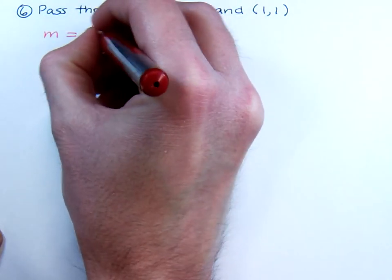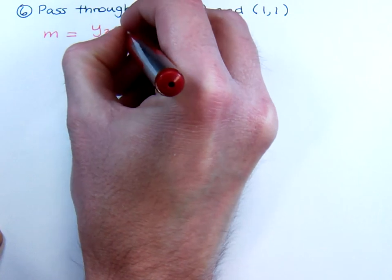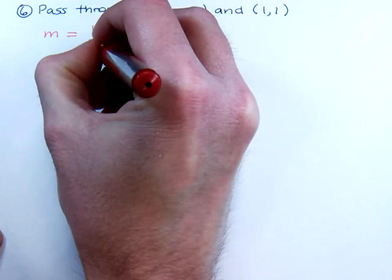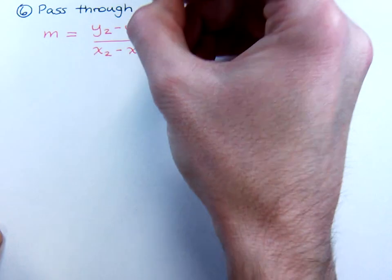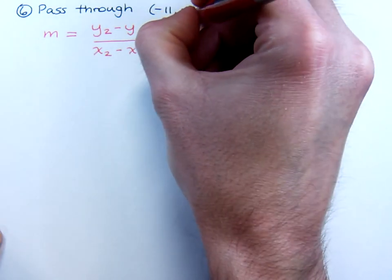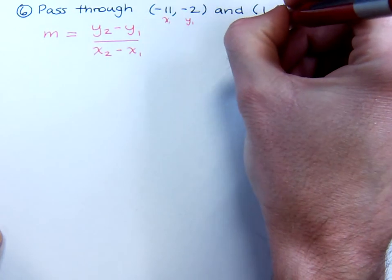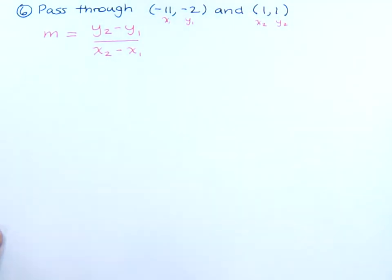So remember, the formula for slope is just the change in y over the change in x. If you want to, go ahead and label these points x₁, y₁, and x₂, y₂.